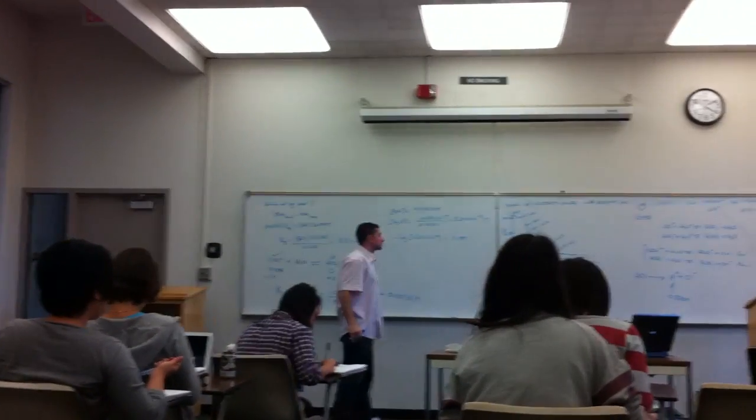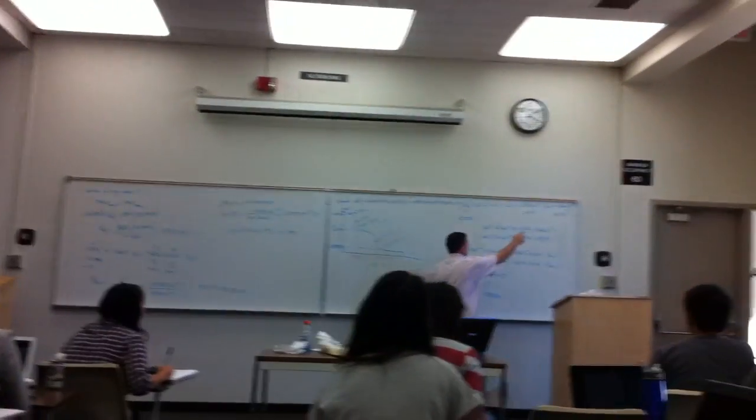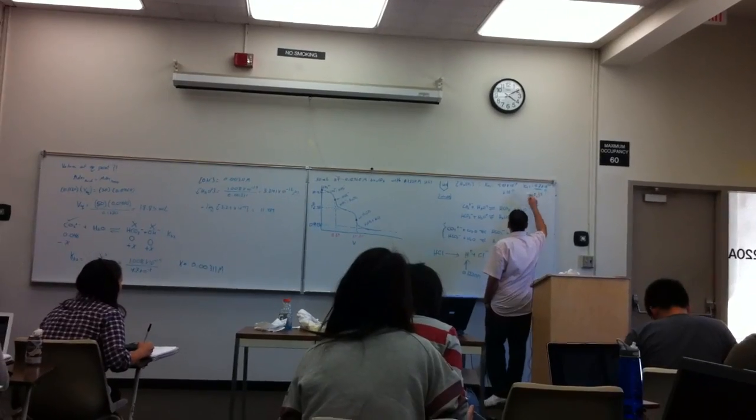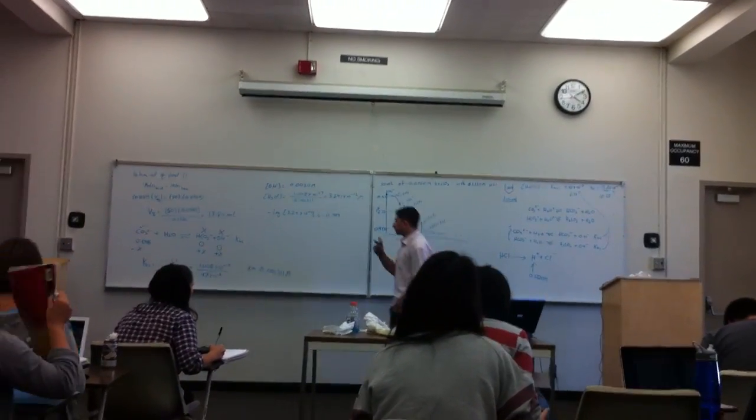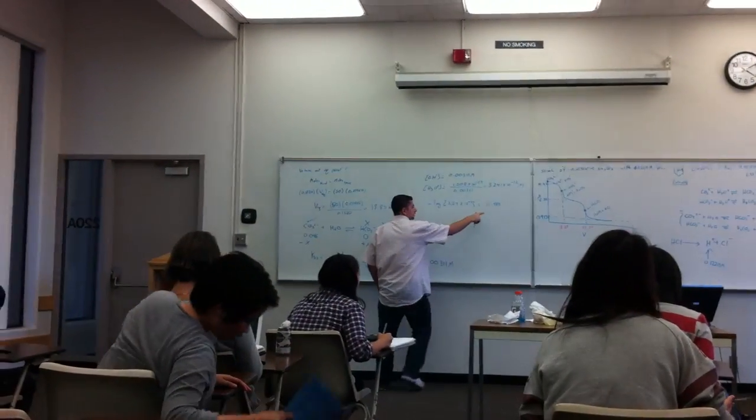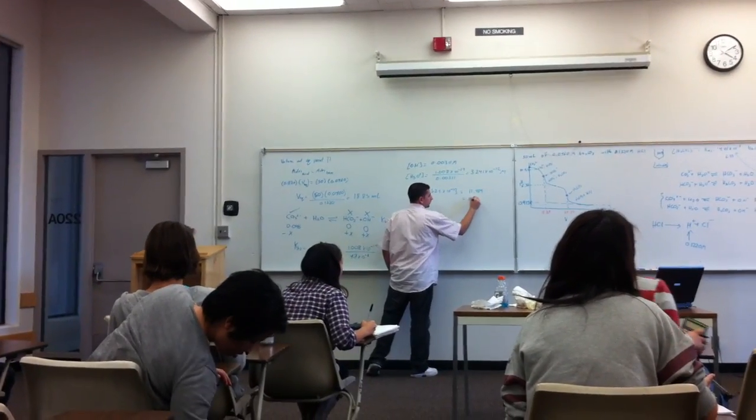Okay. How about the significant figures? What information do we have in here? 2. How about this? 2. So 2 after decimal equals 11.49.